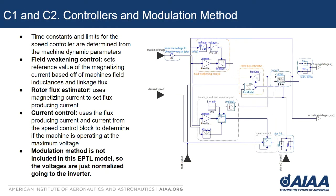Here we have our controller modulation method. The time constants and limits for the speed controller are determined from the machine dynamic parameters from the direct quadrature model. We control the machine based on a field weakening control, which sets the value of the magnetizing current based on the machine's inductances and linkage flux. We estimate the rotor flux using the magnetizing current, and then we control the current using the flux-producing current and the current from the speed control block to determine if the speed is operating at the maximum voltage and keep it safe. Something to note is that the modulation method is not included in this specific EPTL model, so the voltages sent to the inverter are just normalized instead of using a modulation method.